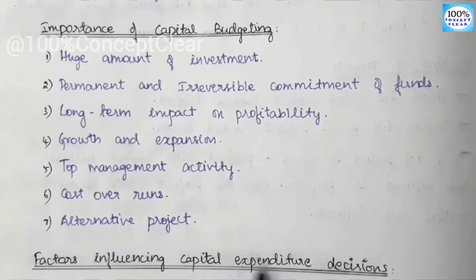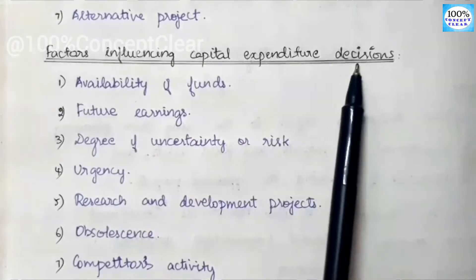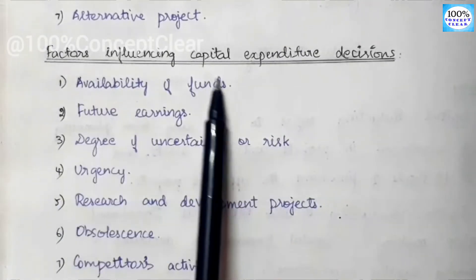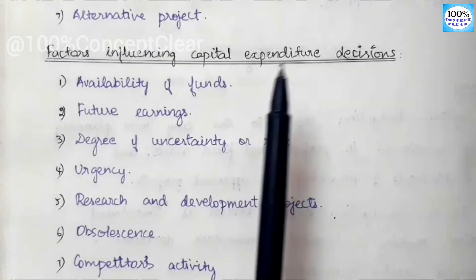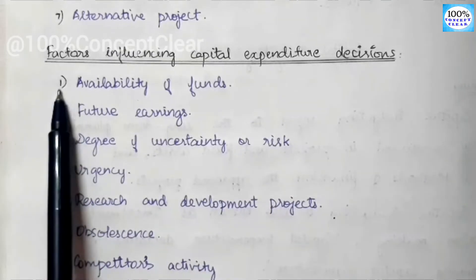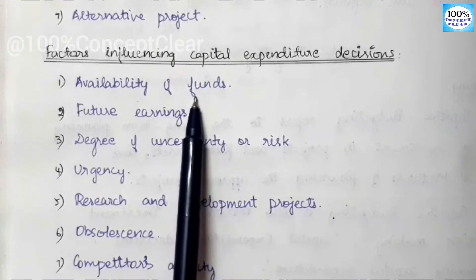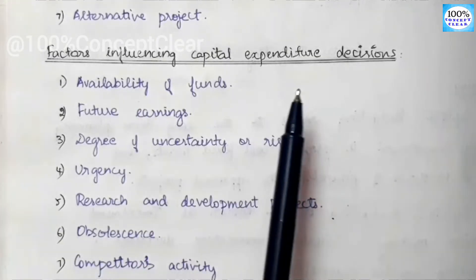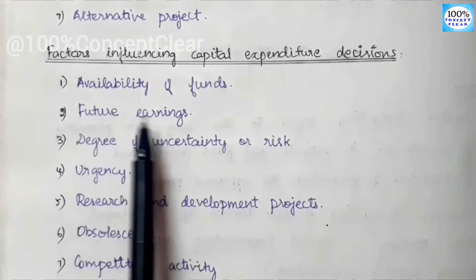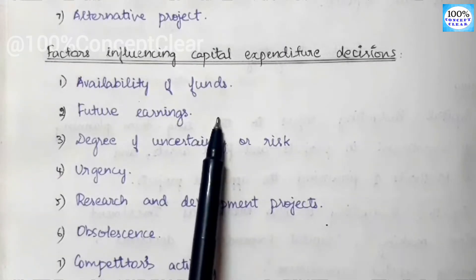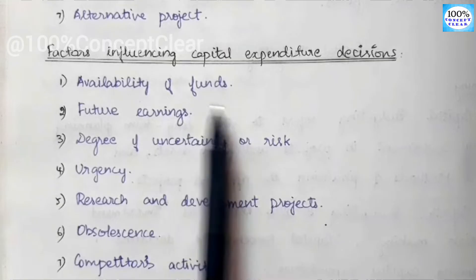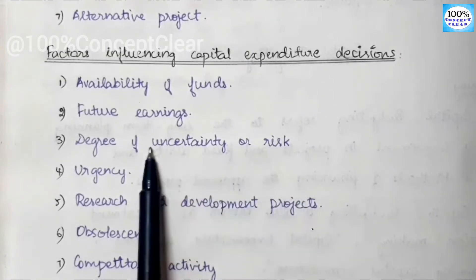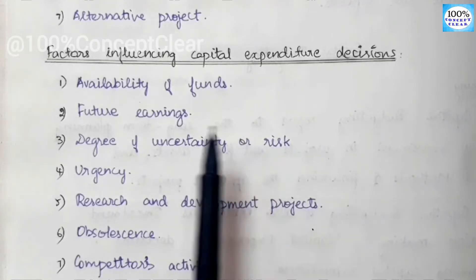Now we look at the factors influencing capital expenditure decisions. The first factor is Availability of Funds — if you want to invest in a business or a project, the availability of funds is a key factor. The next factor is Future Earnings — we consider the future earnings when investing in a project. The third factor is Degree of Uncertainty or Risk — there are many risks and uncertain things in a project that influence the decision.